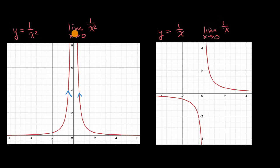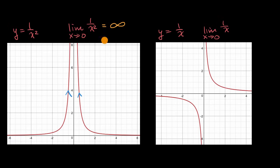What we're going to do in this video is introduce new notation. Instead of just saying it's unbounded, we can say that from both the left and the right it looks like we're going to positive infinity. So we can write that the limit is going to infinity. Some people call this unbounded, some say it does not exist because it's not approaching a finite value, while others use this notation of the limit going to infinity.